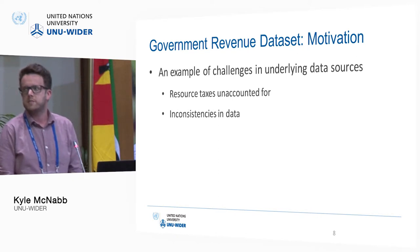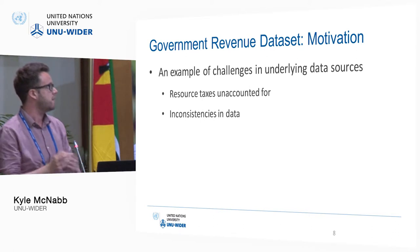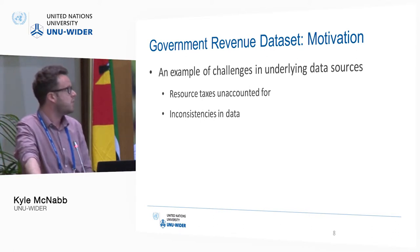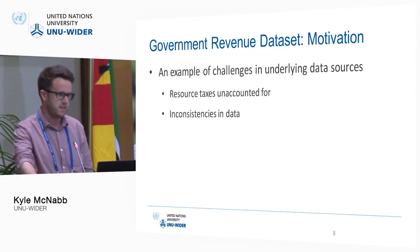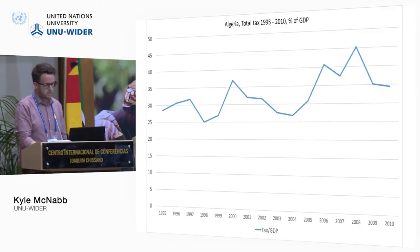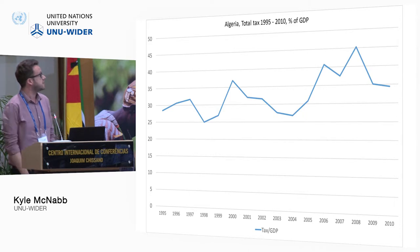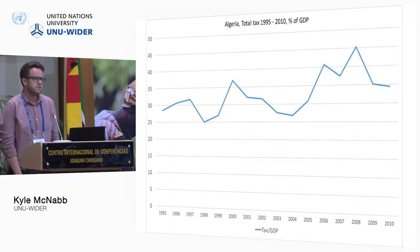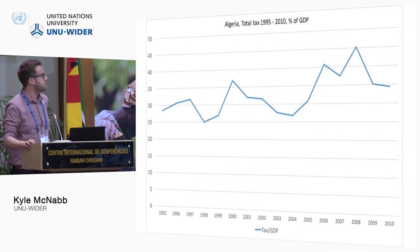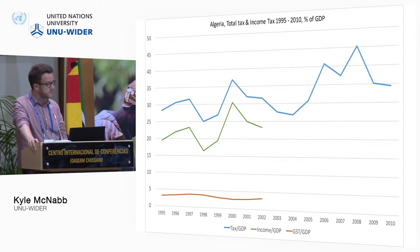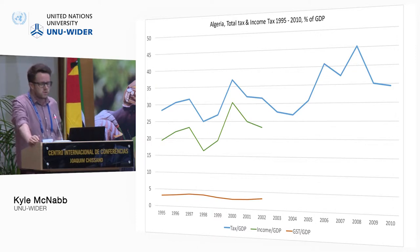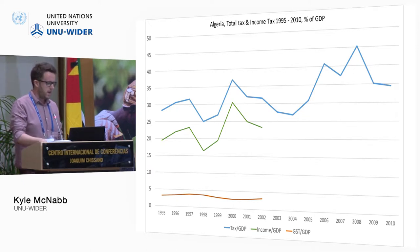To give an illustration of some of the challenges that exist in underlying data, I'm going to show you some data from the IMF's government finance statistics and why this presents real challenges for users trying to make cross-country comparisons. This series is for total taxation in Algeria between 1995 and 2010. This comes from the IMF's government finance statistics, and you can see there's quite a lot of volatility — you might think that's probably due to resource revenue, hydrocarbon revenue, and you would be right. If you try to disaggregate this into two categories — taxes on income and taxes on goods and services — you can see that for the first part of this period, most of the volatility seems to be driven by income taxes, which suggests there's some sort of natural resource revenue tied up in that figure until 2002.